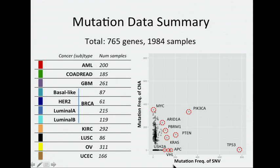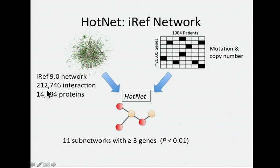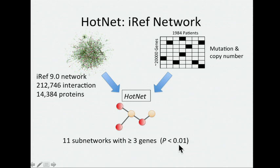You see some of the usual suspects have either high SNP single nucleotide frequency or high copy number frequency, but then there's also this big smear of genes that are very low frequency. The first interaction network is a very noisy one — the IREF index, 200,000 interactions over about 14,000 proteins. This incorporates a lot of different interaction databases, so has a lot of false positives, presumably also a lot of false negatives. Note that there's no temporal context or subtype context here. But we were able to pull out 11 subnetworks with at least three genes, and the p-value is at least 10 to the minus 2.